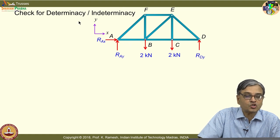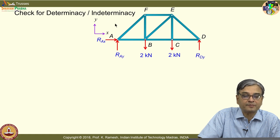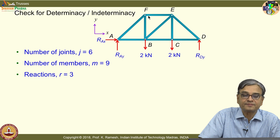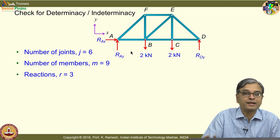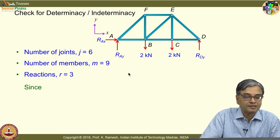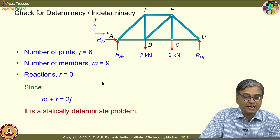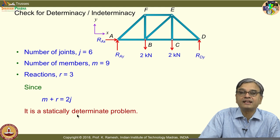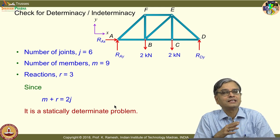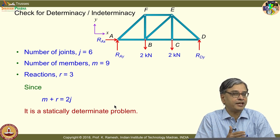Check for determinacy or indeterminacy. How many joints are there? I have 6 joints. And members: 1, 2, 3, 4, 5, 6, 7, 8, 9 — nine members. The number of unknown reactions is 3. Does it satisfy M + R = 2j? It does satisfy M + R = 2j. Since M + R = 2j, this is a statically determinate problem. It is important training to identify whether the problem is statically determinate or indeterminate.